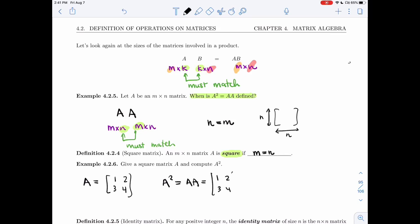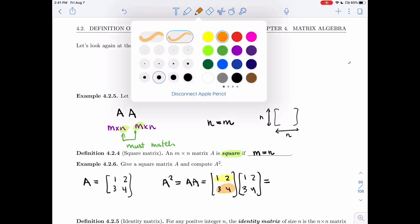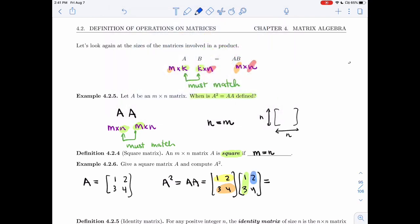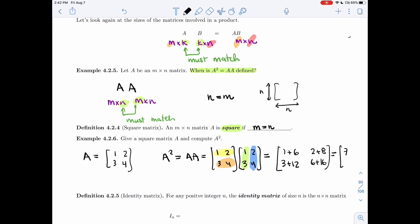So that means I'm going to multiply one, two, three, four by one, two, three, four. Let's label them with colors. Again, this is something you do at the start, but after one class, I'm going to stop doing that. So yellow times green is one plus six. Yellow times blue is two plus eight. Green times orange is three plus twelve. And orange times blue is six plus sixteen. So I'm getting seven, ten, fifteen, twenty-two. That's the square of the matrix A.